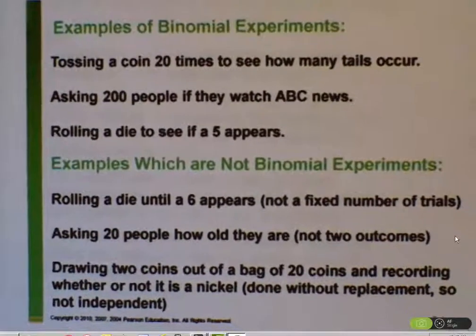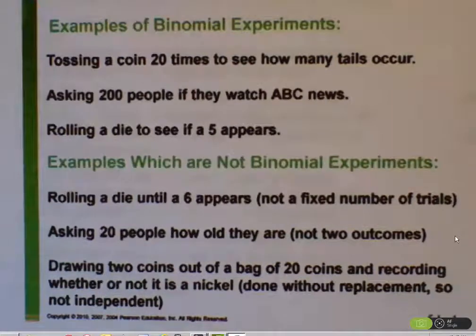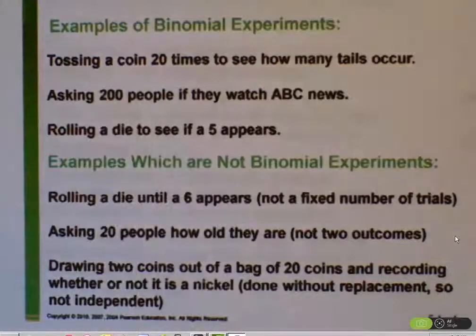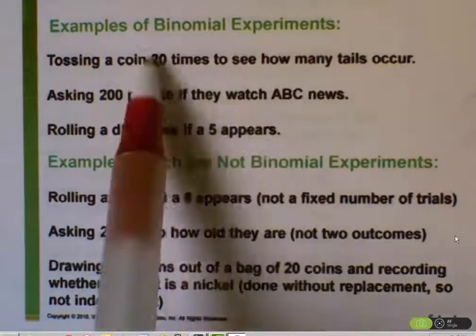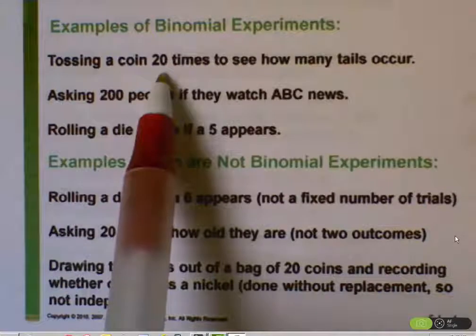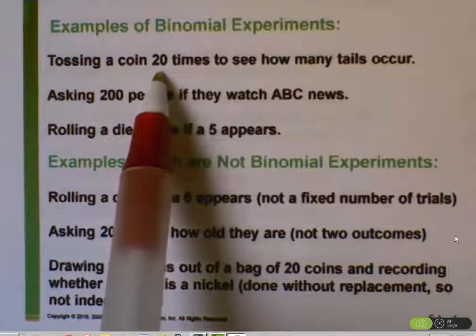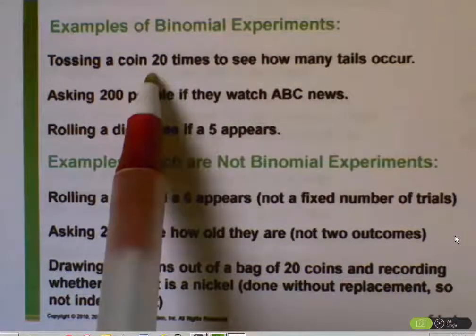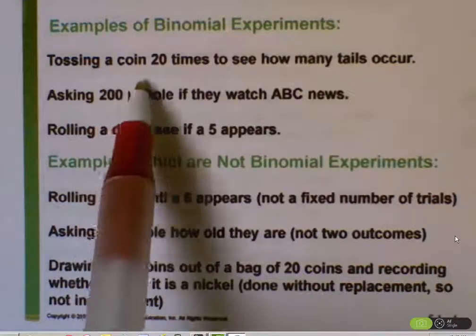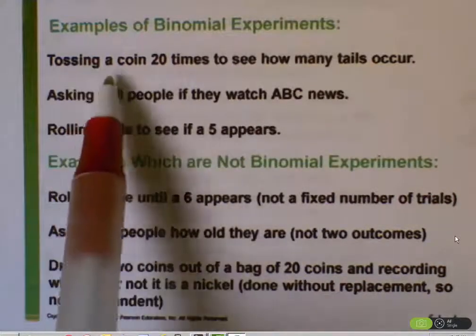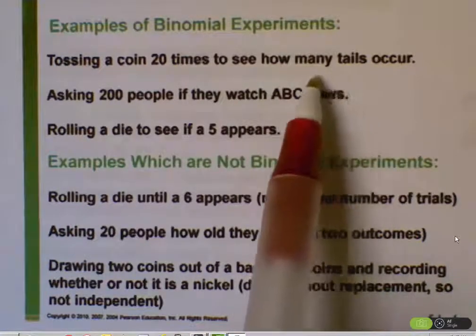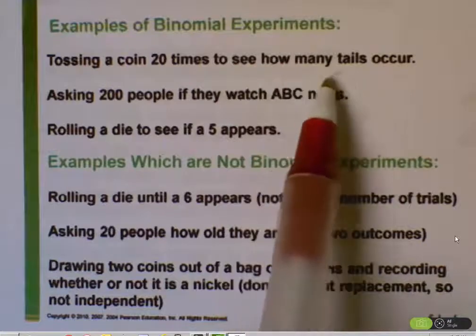Examples of binomial experiments include tossing a coin 20 times to see how many tails occur. We definitely have a fixed number of trials. The trials are independent in that whatever the coin lands on in the first trial doesn't affect what it lands on in the second trial. The experiment has two possible outcomes — heads and tails — and the probability of landing on tails stays the same no matter how many times you flip the coin. So that's a binomial experiment.